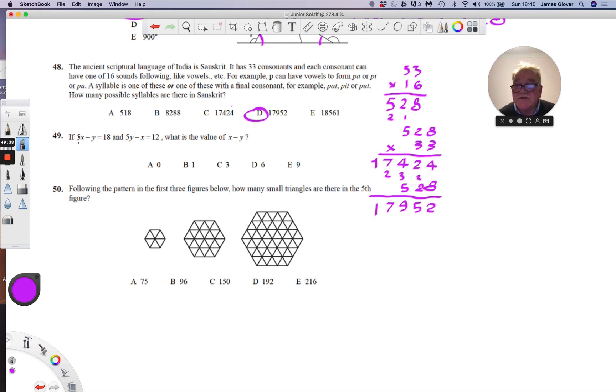And this question: 5x minus y is 18, 5y minus x is 12. What's the value of x minus y? So if we write this down as 5x take away y equals 18, and then write this one down as minus x plus 5y is equal to 12.